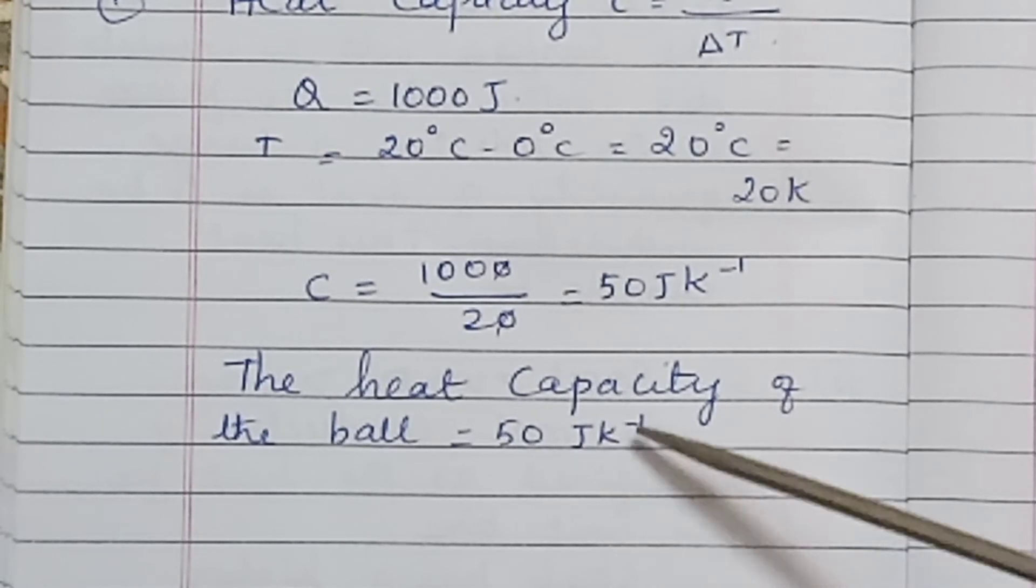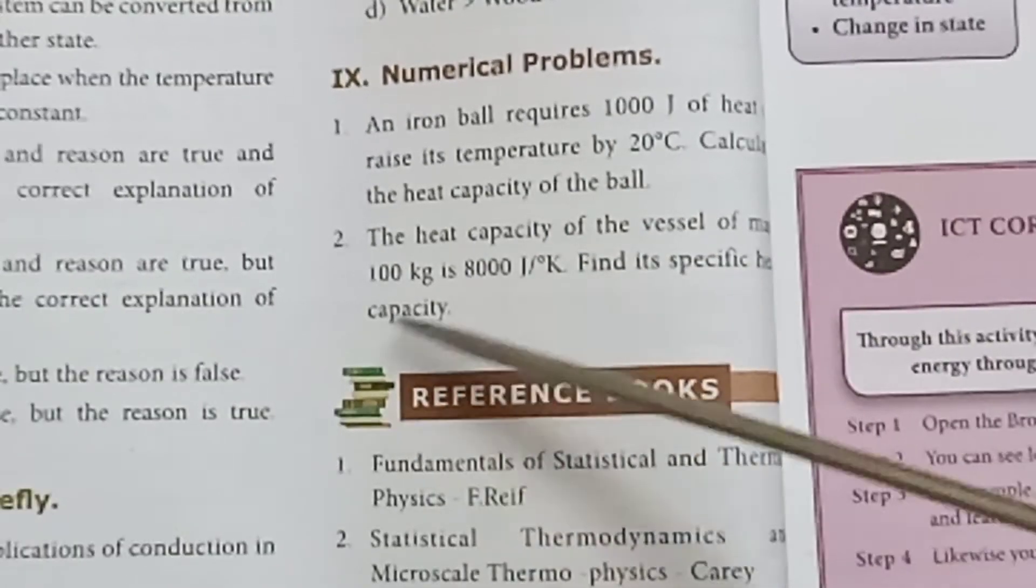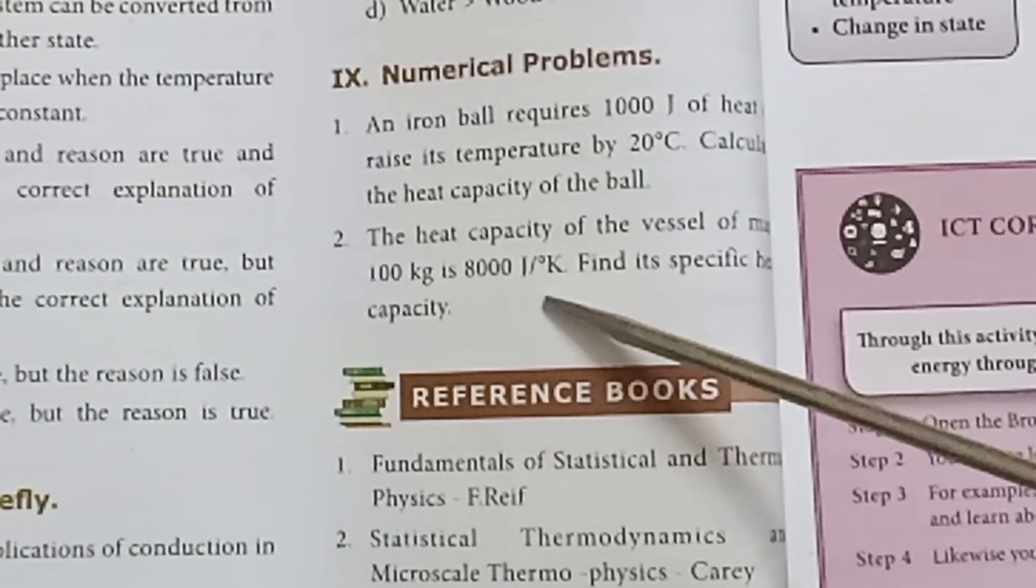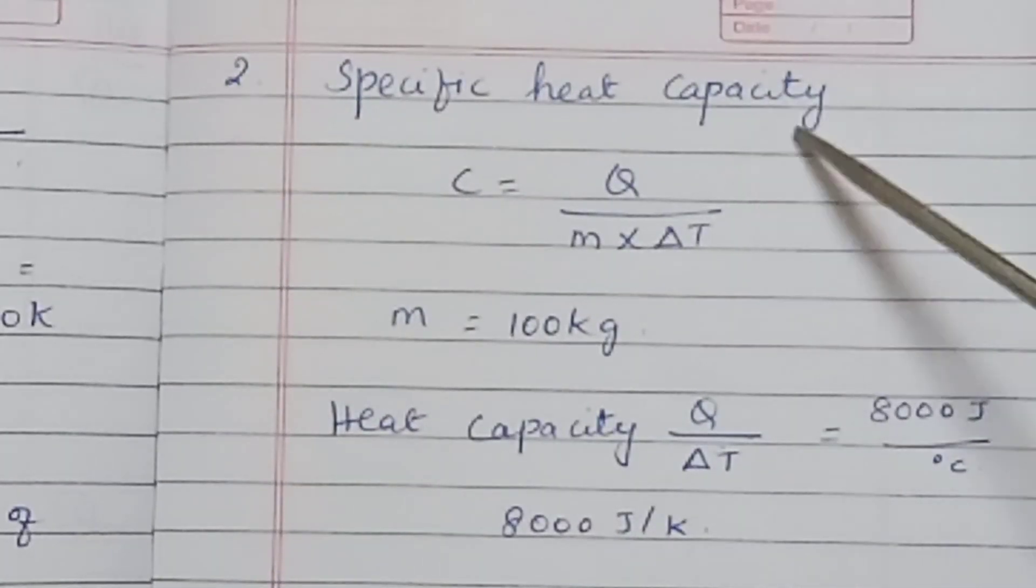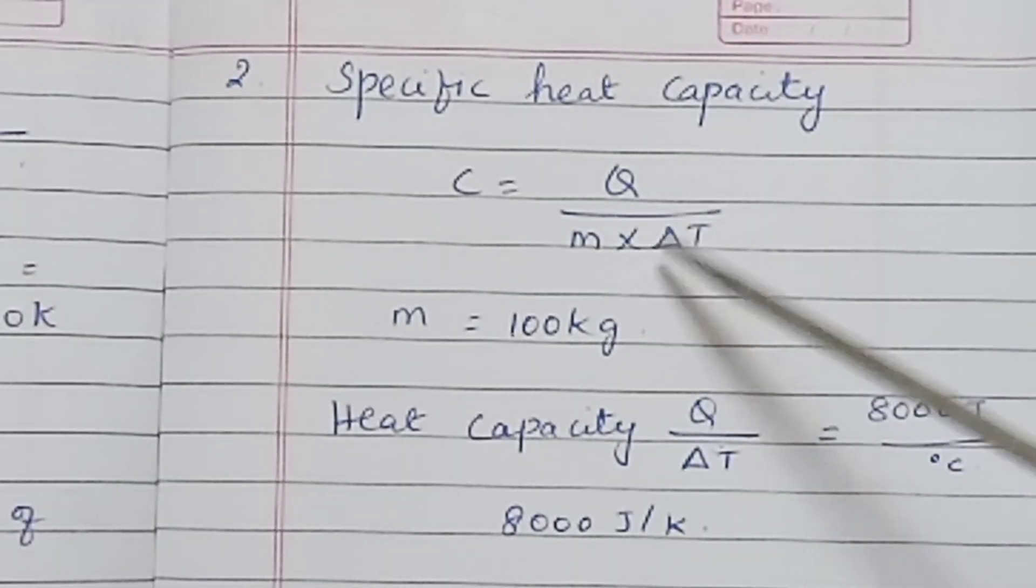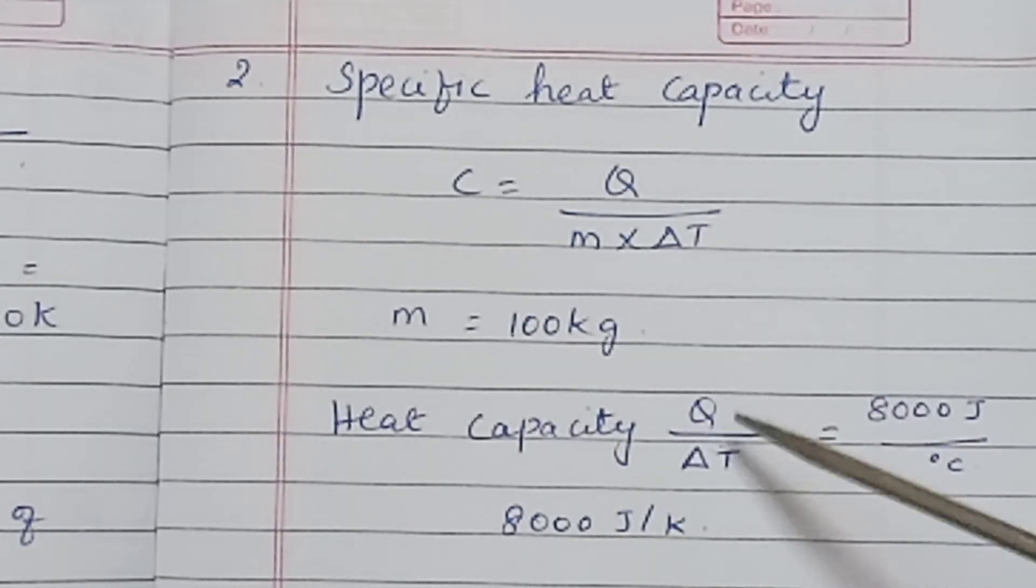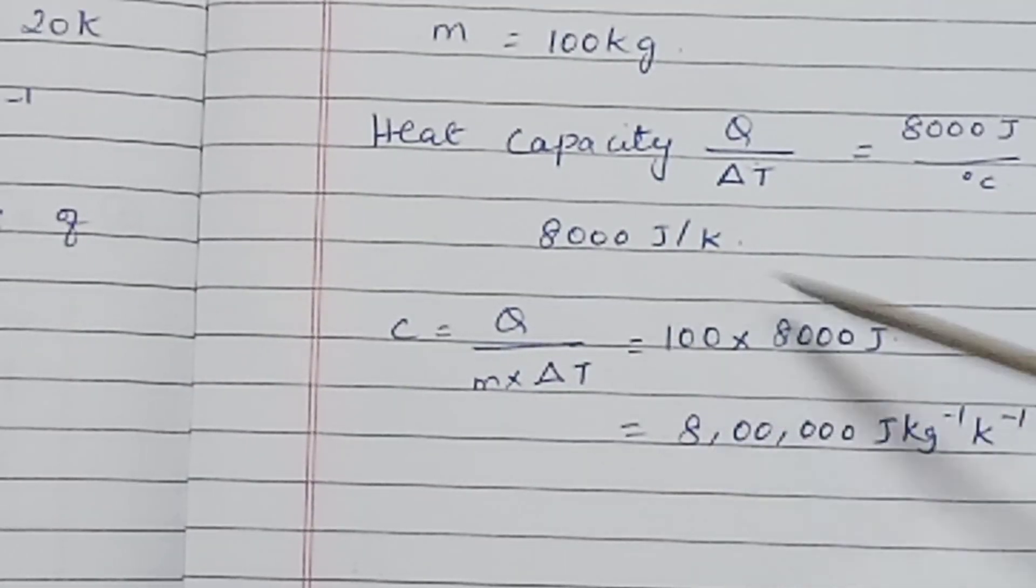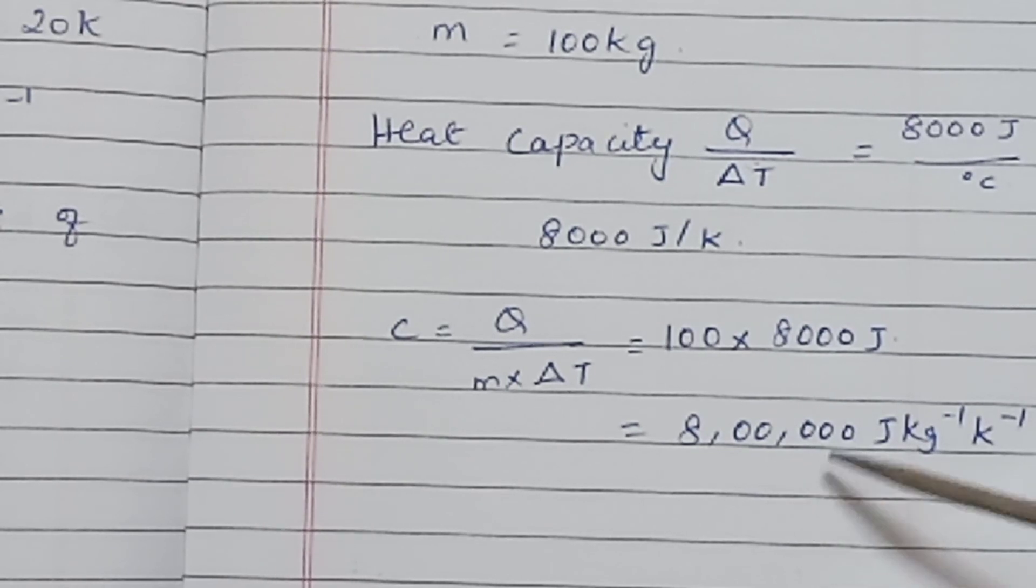Second one: The heat capacity of a vessel of mass 100 kg is 8000 joule per degree Kelvin. Find its specific heat capacity. Specific heat capacity C = Q / (M × ΔT). Mass M = 100 kilograms. Heat capacity formula Q / ΔT = 8000 Joule per degree Celsius. Substituting the values: C = 8000 / 100. The answer is 80 Joule Kg^-1 K^-1.